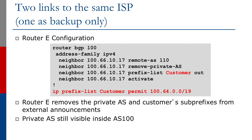Router E is the upstream provider's connection to the rest of the internet. The key command here is 'remove private AS', which strips out the private AS 65534 from the announcement of the customer prefix out to the internet. As best practice, private AS numbers should not be seen on the public internet. The result is that router E announces the slash 19 prefix, learned from the customer end site, out to the internet as though it originated from AS100.